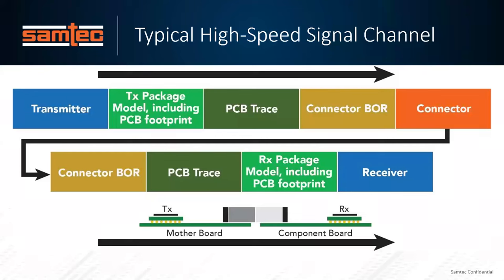It's not just the transmitter — the silicon — but also how does that signal get from the die down to the substrate, down to the IC package, going from the package through the solder ball down to the PCB? How does that signal go to the PCB trace on the PCB? How many layers does it go through? Are there vias, et cetera?